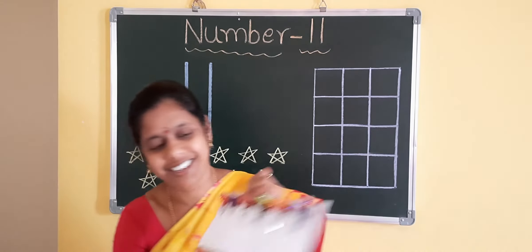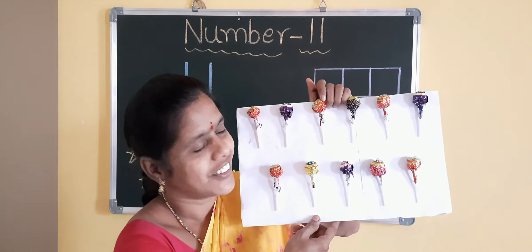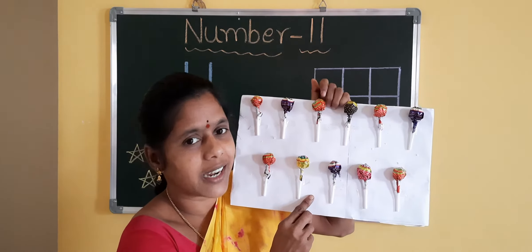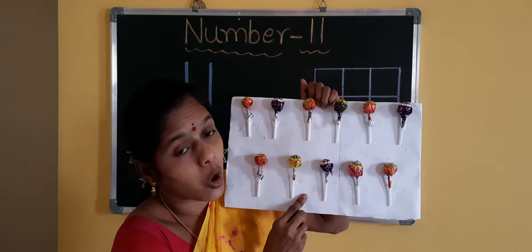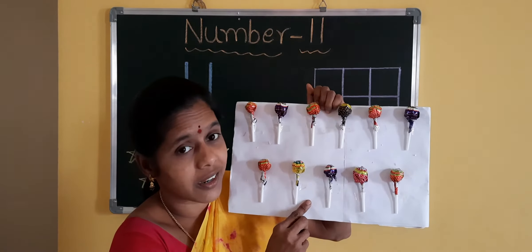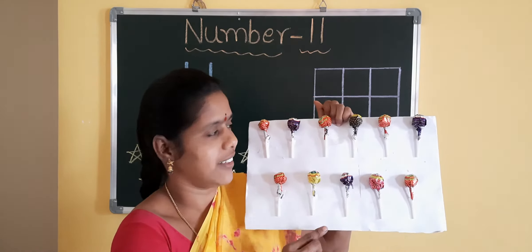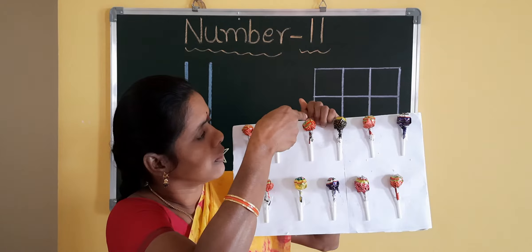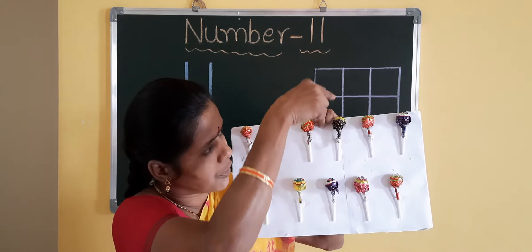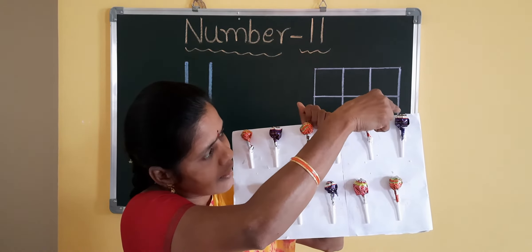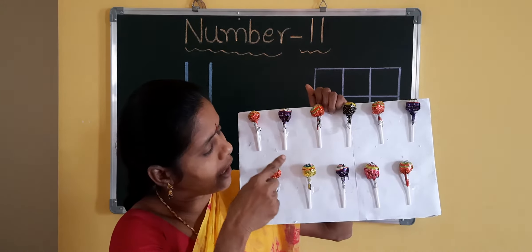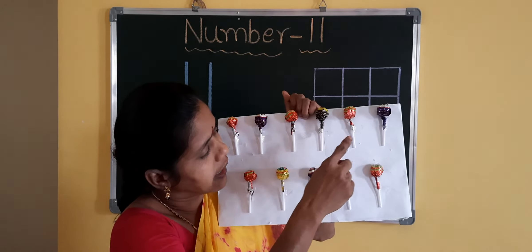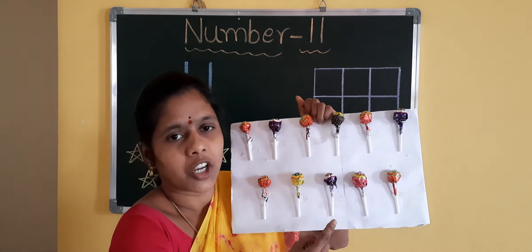Children, see here. What are these? Yes, these are lollipops. How many lollipops can you see here? Shall we count the lollipops? Yes. 1, 2, 3, 4, 5, 6, 7, 8, 9, 10, 11. Count once again.